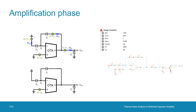We now repeat the same process for the amplification phase. From theoretical calculations, the output noise power is kT/C amplified by 1/β, where β is the feedback factor. Here the feedback factor β = Cf / (Cf + Cs) = 1/11 ≈ 0.091.